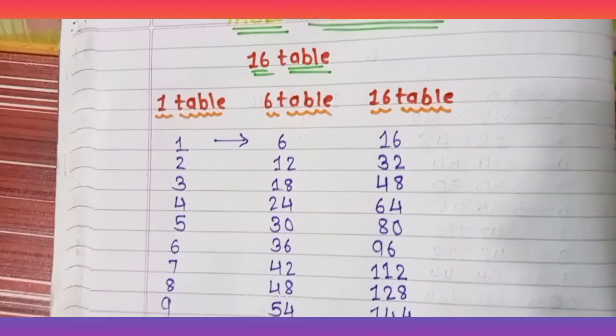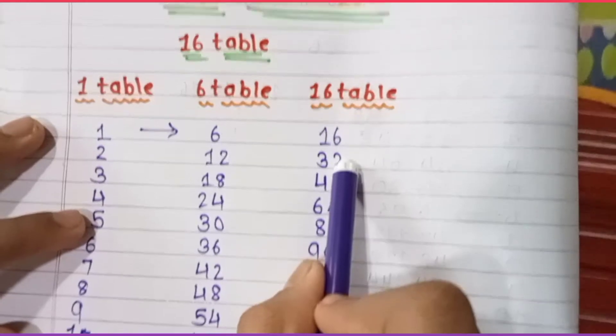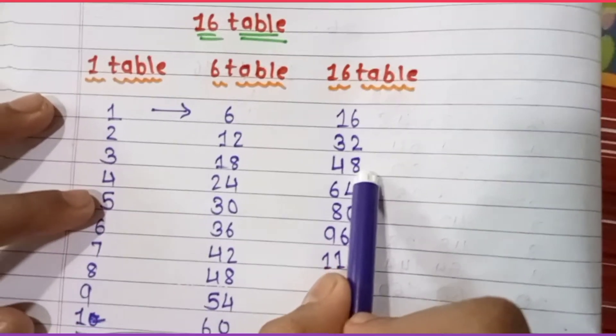What you have to do is cancel this 0 and write these three numbers: 1, 16. So we are done with the 16 table, right?